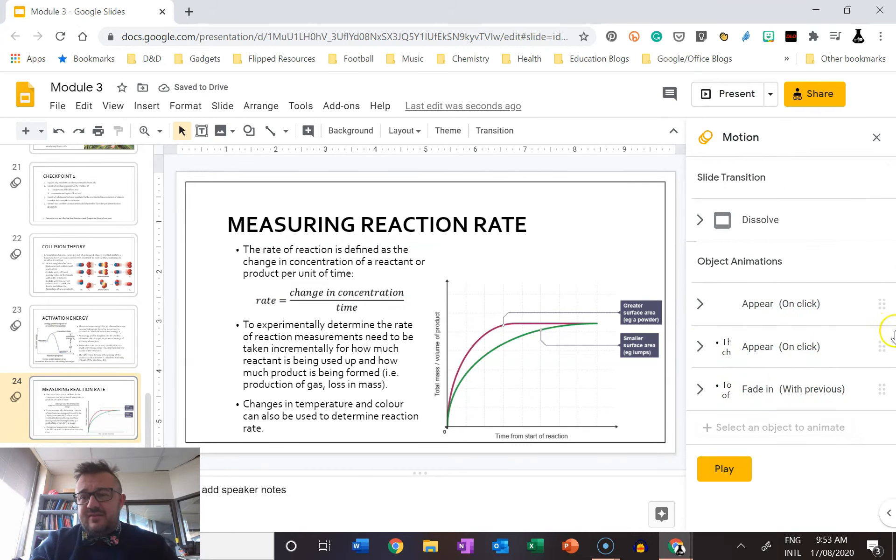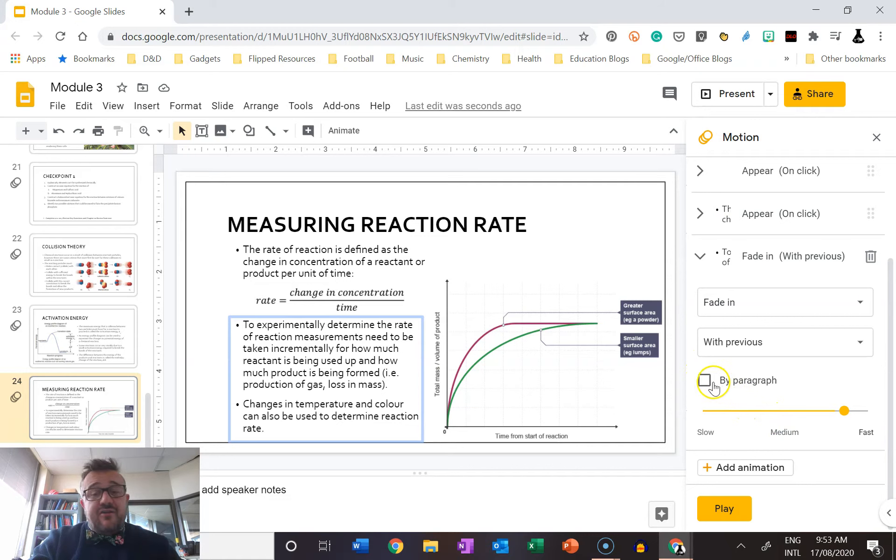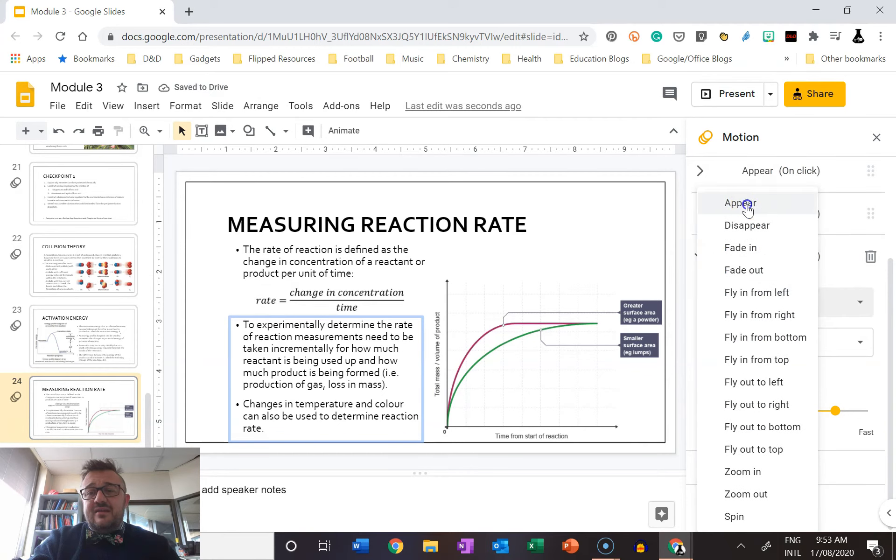So if we click on the two of—that's the next one—we go by paragraph to see how there's multiples in there, fade in on click, and again, appear.